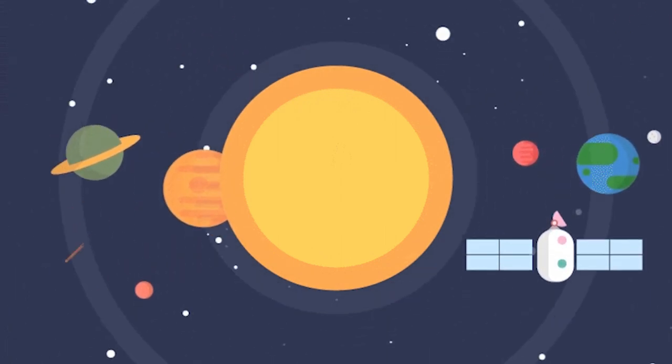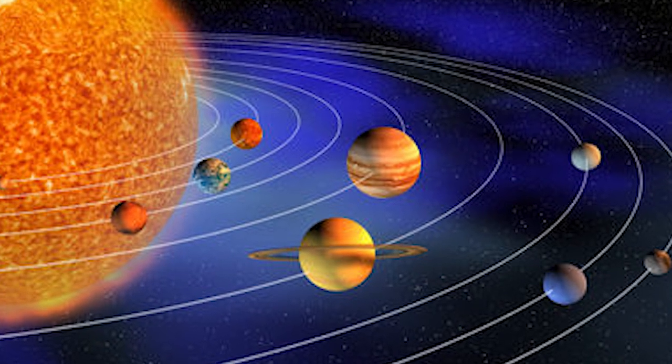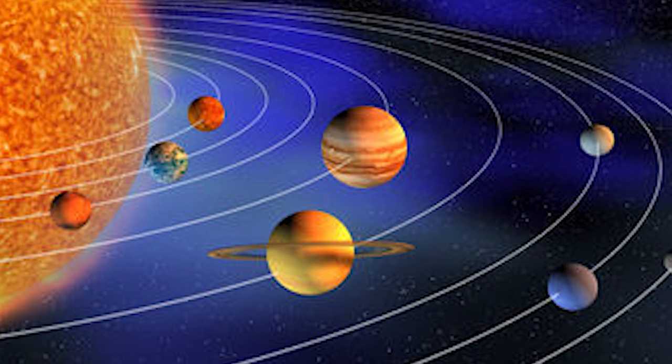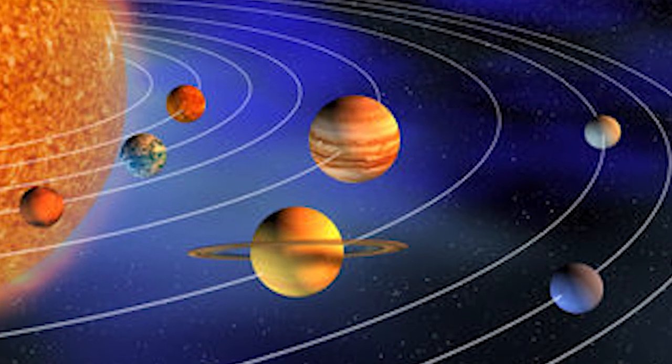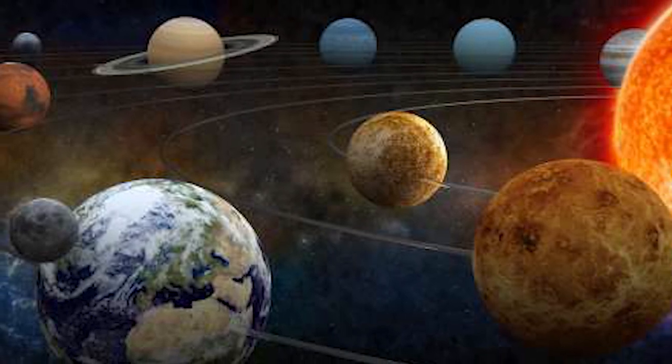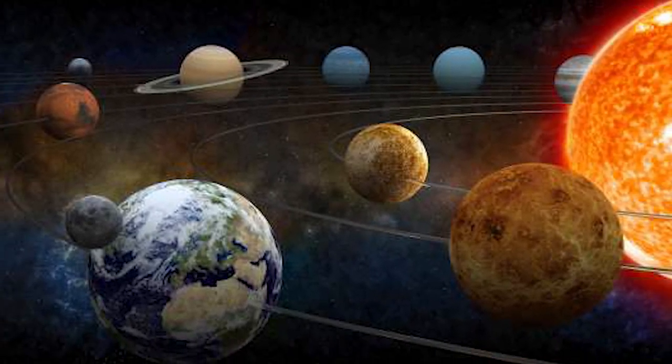So, instead of going Mercury, Venus, Earth, Mars, Jupiter, Saturn, Uranus, Neptune and hell whatever, let's throw Pluto in there too. It now goes Pluto, Neptune, Uranus, Saturn, Jupiter, Mars, Earth, Venus, Mercury. With the former being closer to the sun, and the latter being at the extremities of the solar system.